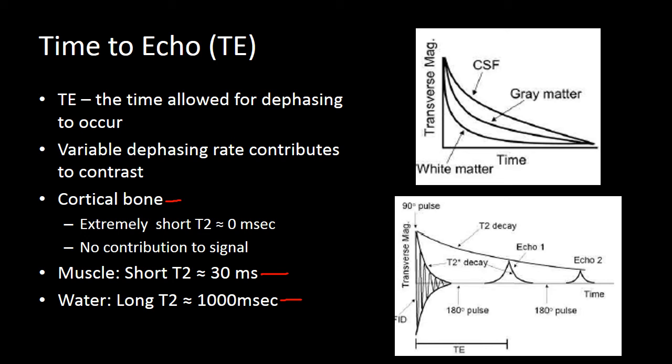If we have a very short TR and short TE sequence, the water has not dephased, but it also hasn't had time to recover its longitudinal magnetization. When we look at that for neuroimaging, white matter dephases very rapidly, so white matter on a T2-weighted image will be darker than gray matter, which is darker than CSF.